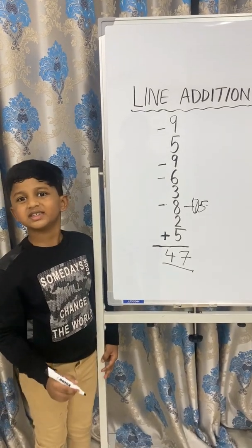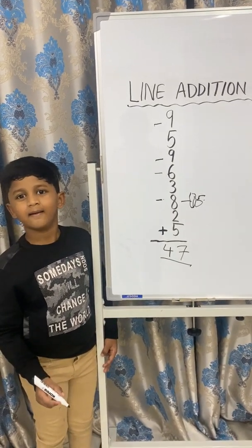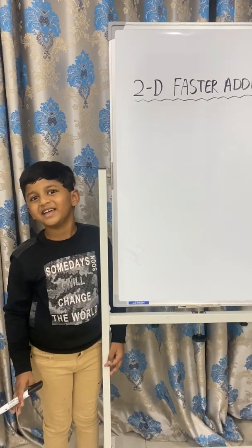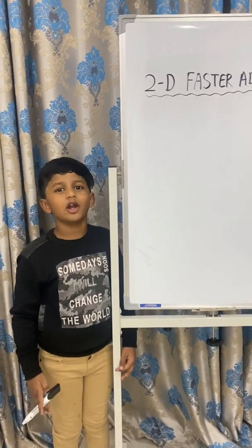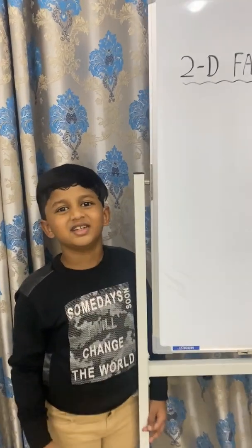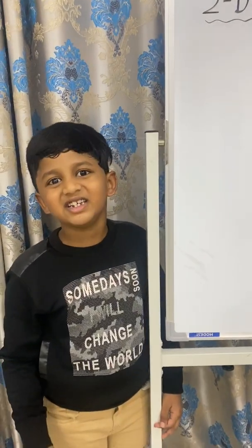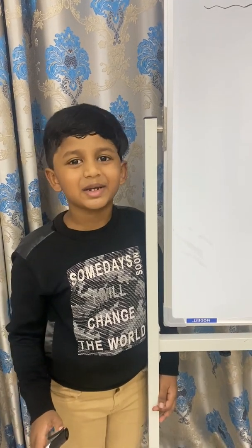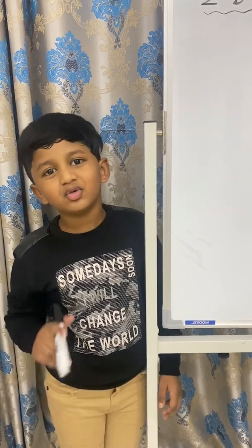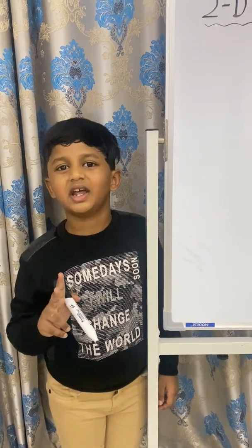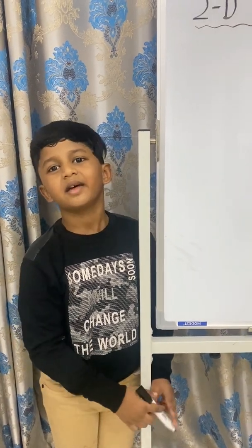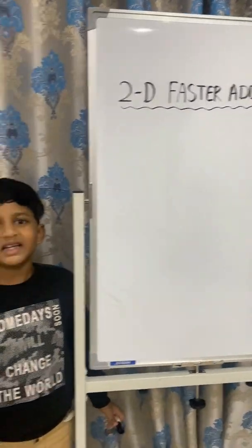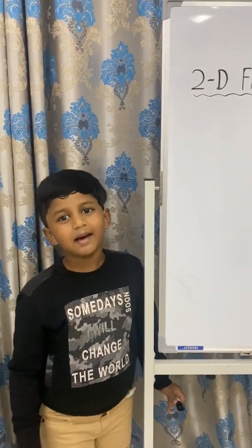See, it is so simple. Now we will see one more method. It is called 2-digit fast addition. Using this method, we can add two 2-digit numbers quickly. Let's take an example.